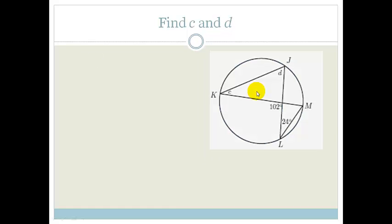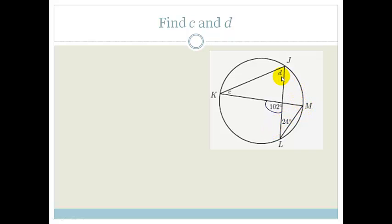Now they want us, without reasons, to find points C and D. So let's look at what they've given us. We've got a circle, and we've been told that this random point of intersection is 102 degrees, L is 24 degrees. That's M, that's D, and that's C.